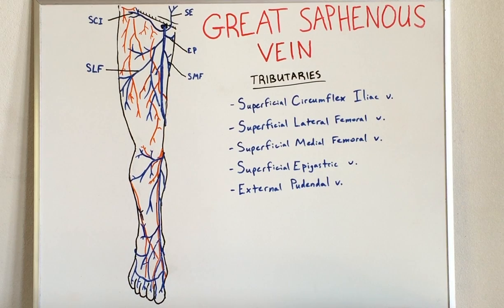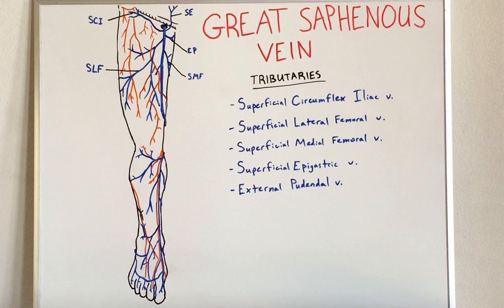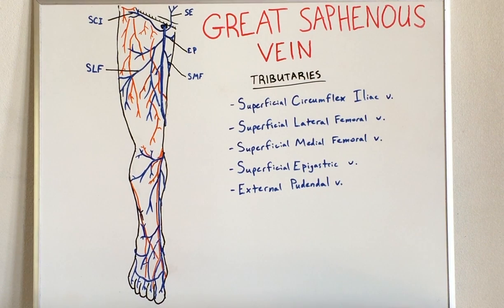Today's lecture is on the Great Saphenous Vein. The Great Saphenous Vein is the longest vein in our body, and it is the superficial vein of the medial aspect of the lower extremity.